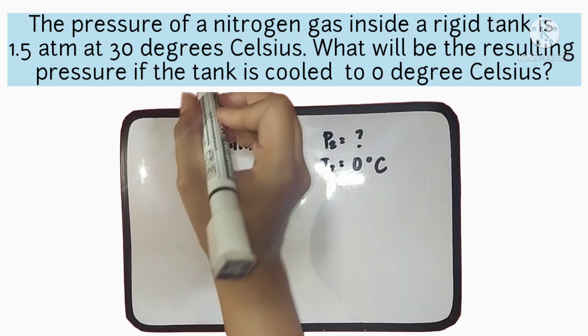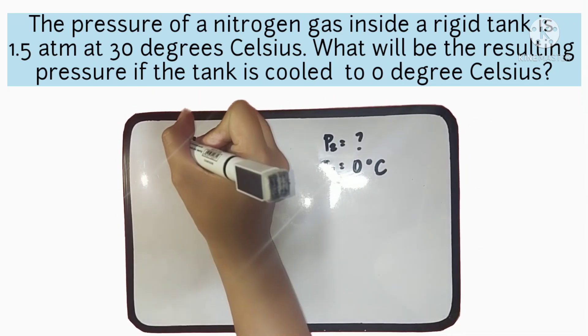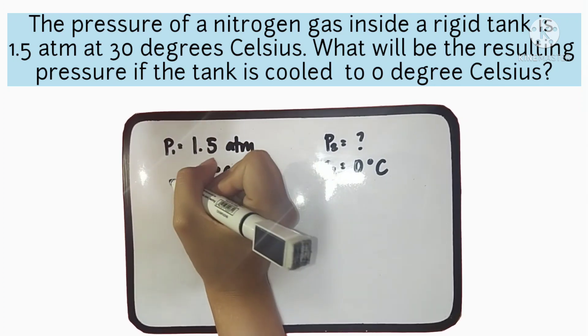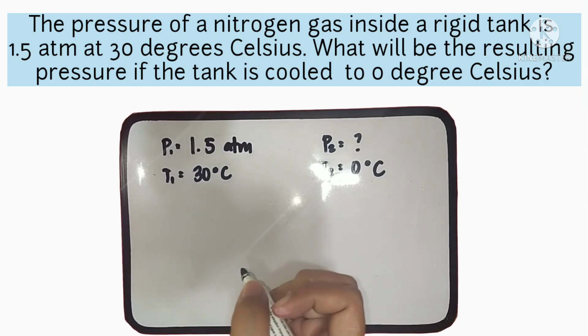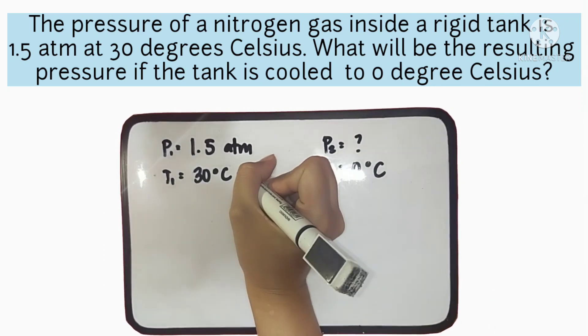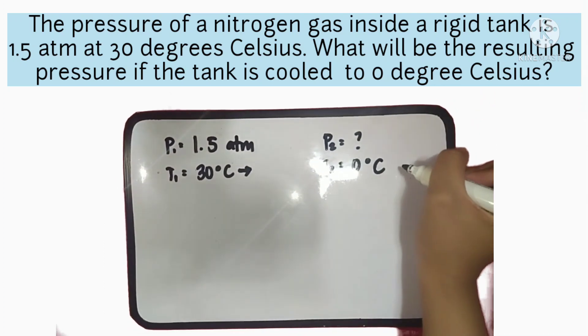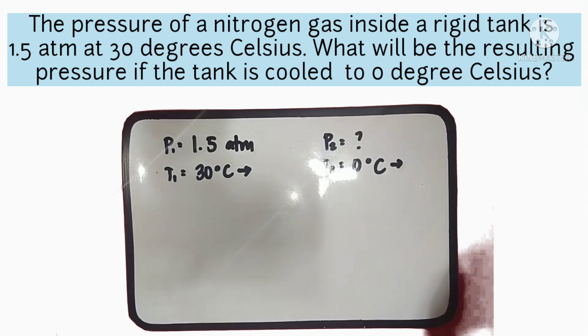These two variables are the initial pressure and the initial temperature. Just like what we did with Charles Law, we have to convert this first into Kelvin, being the absolute unit for the temperature.